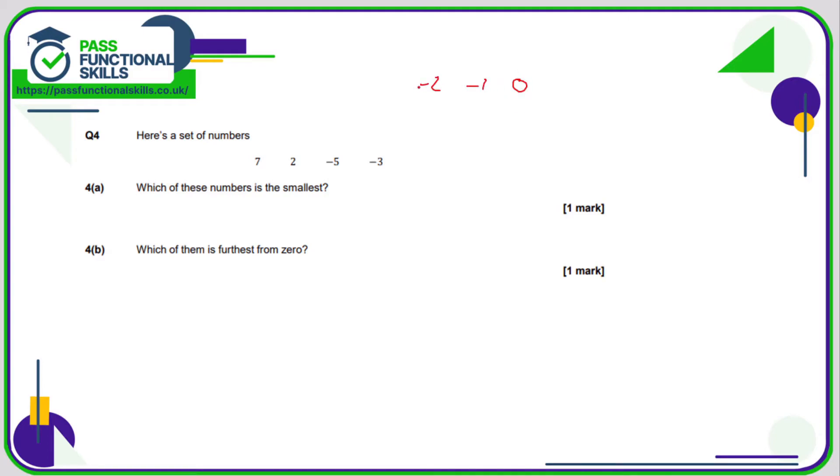Zero, minus one, minus two, minus three, minus four, minus five. Obviously the numbers are getting smaller as we're going to the left. So as minus five is more to the left than minus three, minus five is therefore the smallest number.